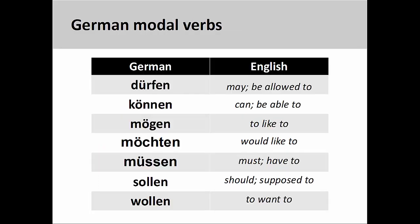First, however, let's take a look at what the modal verbs mean. There are seven modal verbs in German: dürfen, meaning may or to be allowed to; können, meaning can or to be able to.